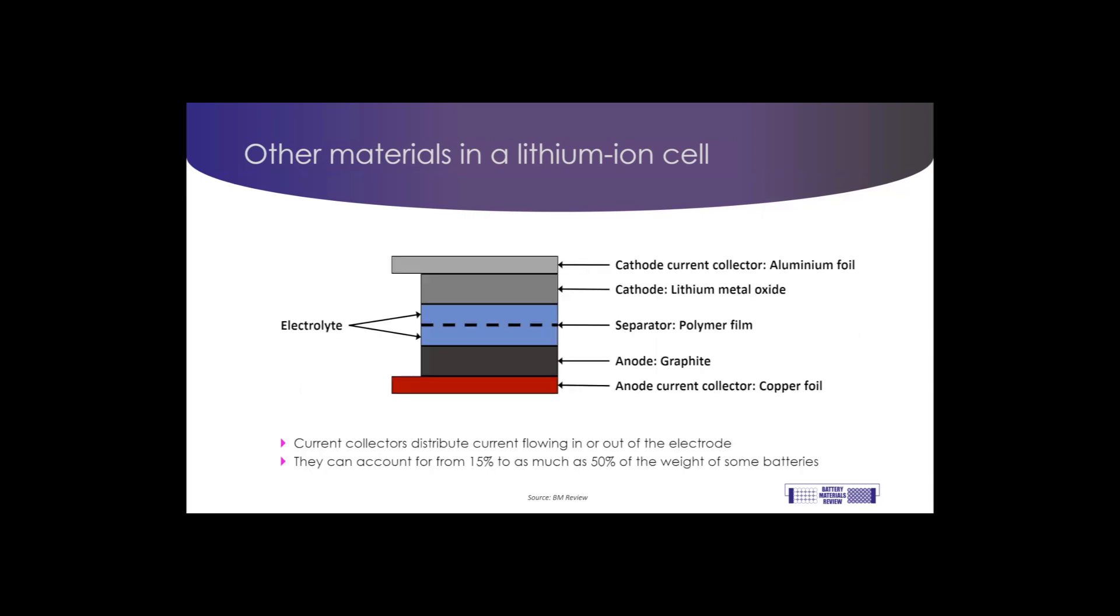Those materials are copper and aluminium, and they're actually used as current collectors to distribute the current flowing in or out of the electrode. In a cell, you'll find the cathode and anode layered on top of the thin foil of these metals.